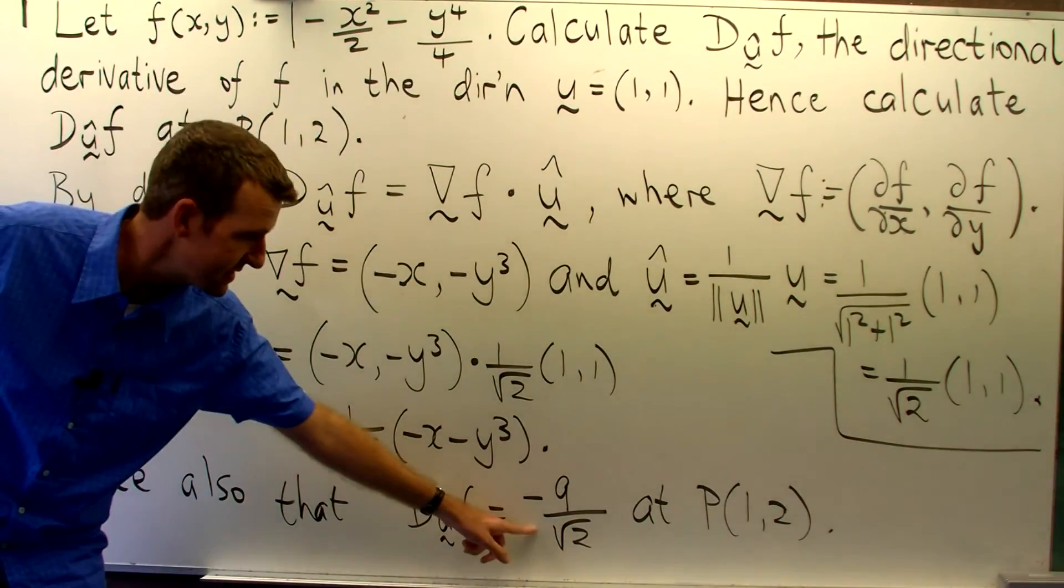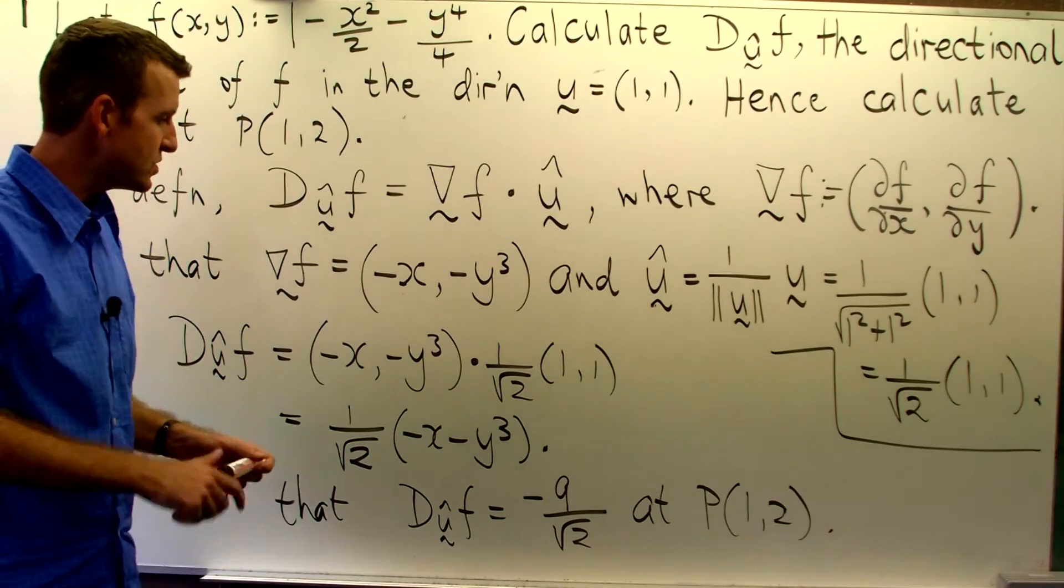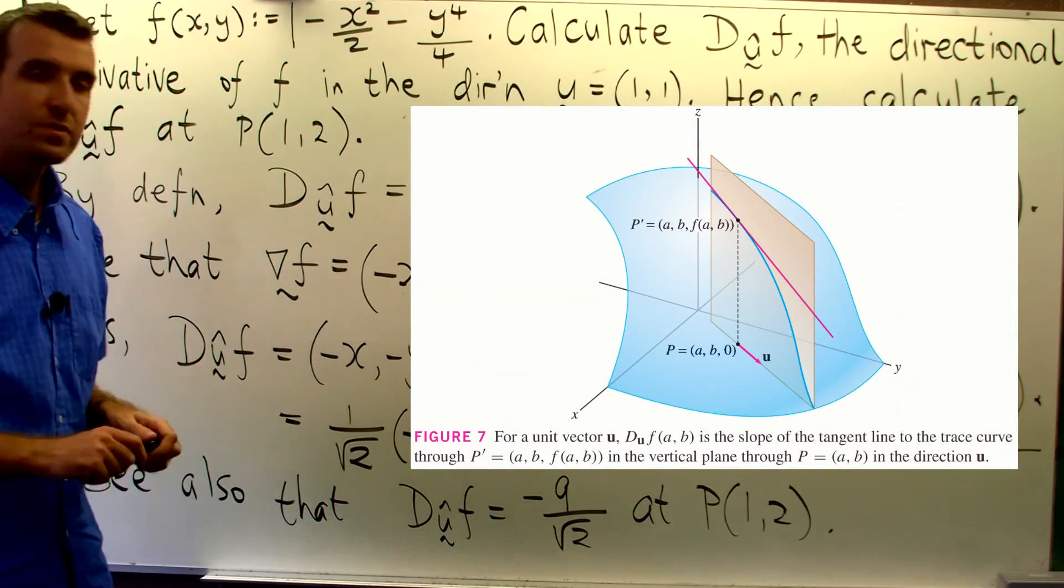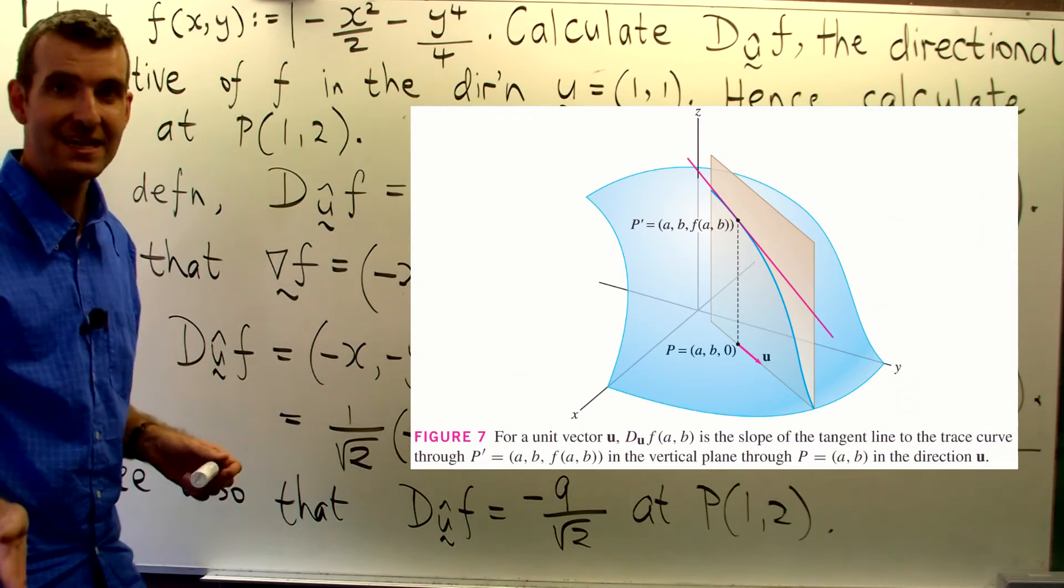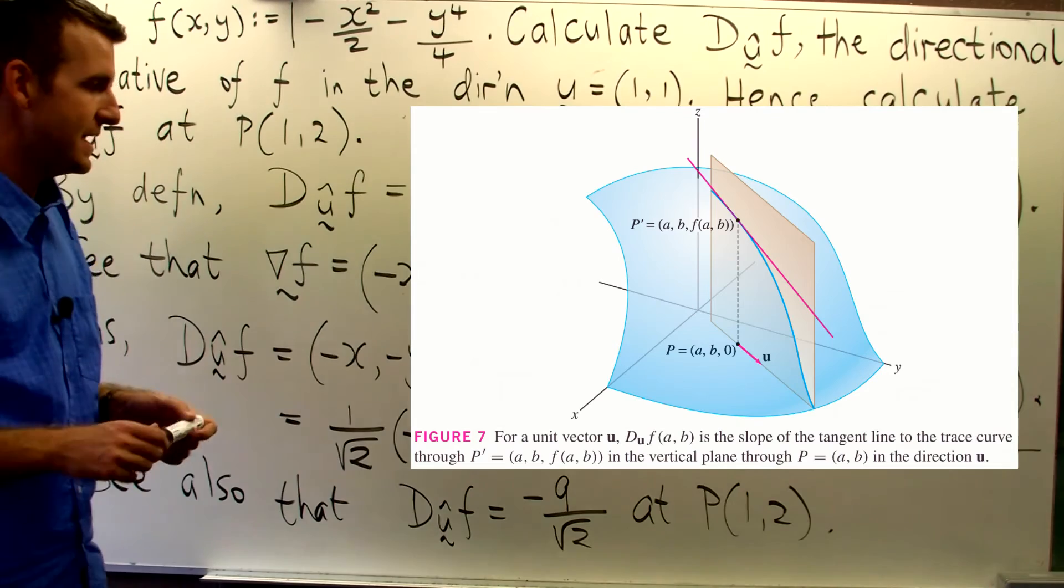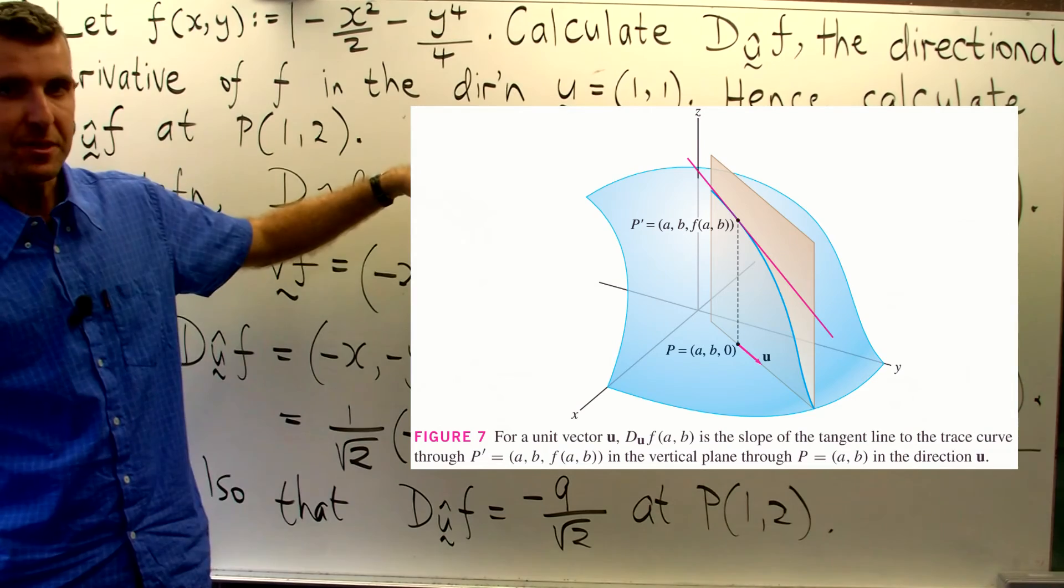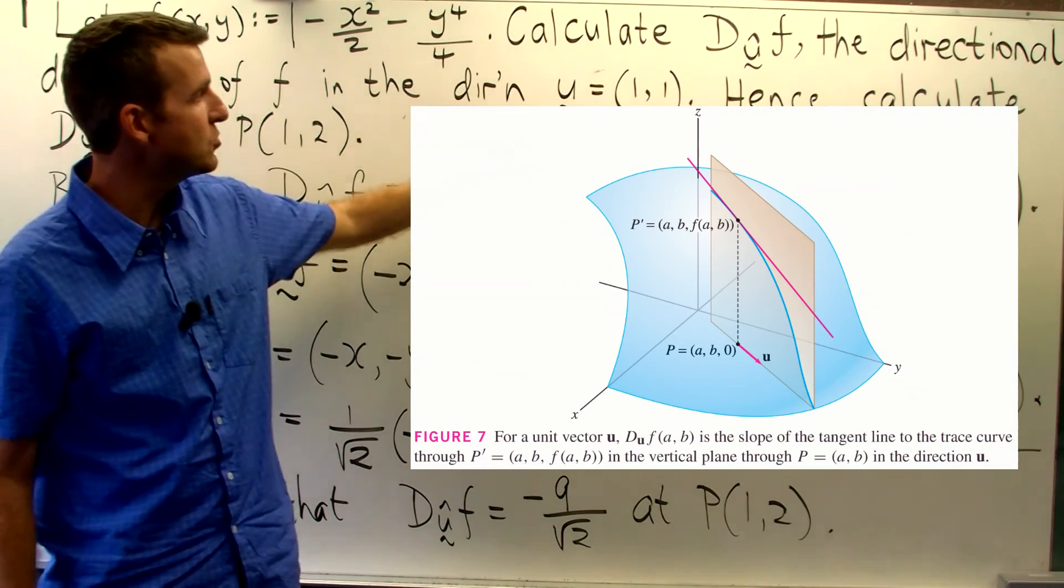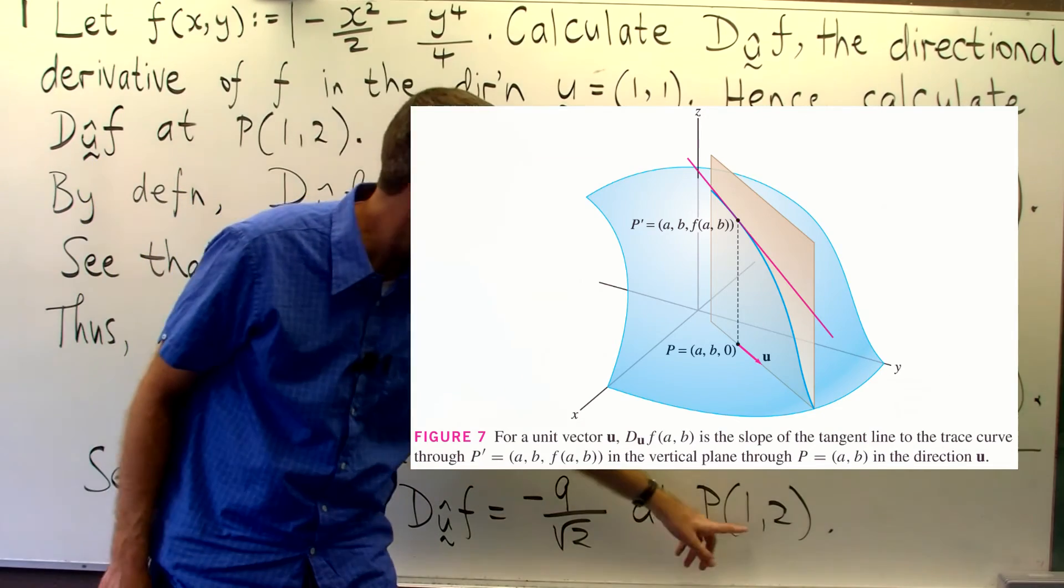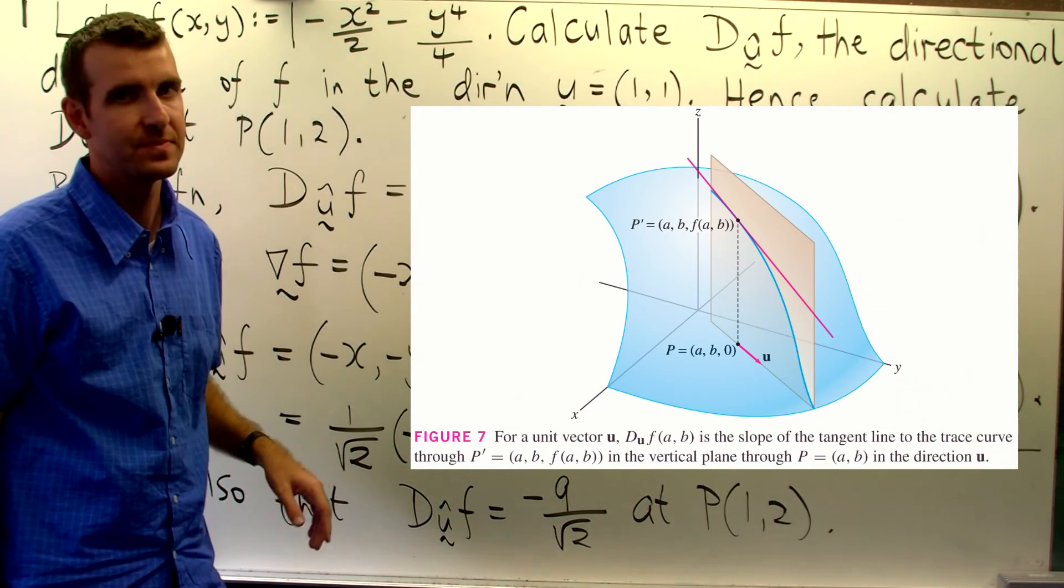Alright, so we've got an answer here. What does it mean? Well, the directional derivative, geometrically speaking, in this particular case would measure the slope of a tangent line to the surface z equals f. Now that tangent line lies in a vertical plane and that vertical plane contains this vector and the point 1 comma 2 comma f of 1 comma 2.